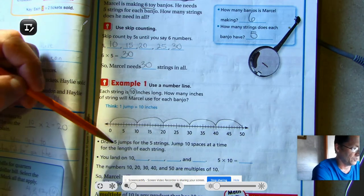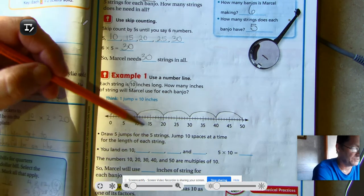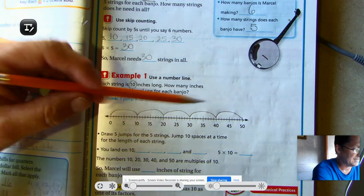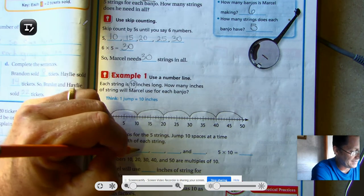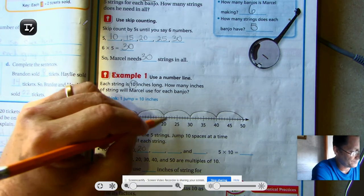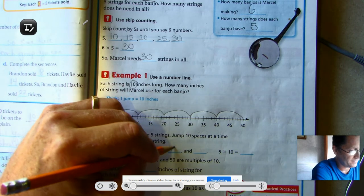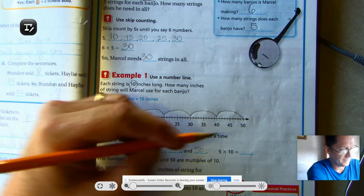So again, we've drawn five jumps for the five strings and 10 spaces at a time for the length of each string. So we landed on 10, 20, 30, 40, and finally 50.